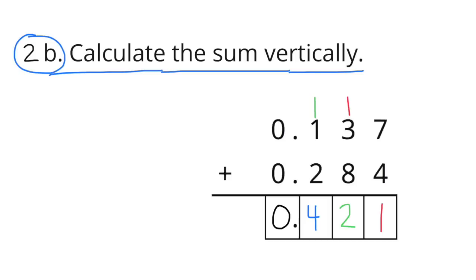7 plus 4 is 11. Carry the 1. 1 plus 3 plus 8 is 12. Carry the 1. 1 plus 1 plus 2 is 4. The total is 421 thousandths.